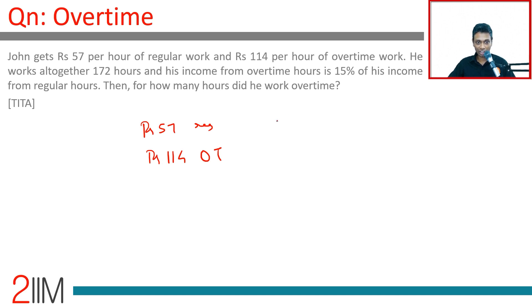Let's say he works t hours regular. He works 172 minus t hours overtime. So 57t is the total he gets from regular work, and 114 into 172 minus t is the total he gets from overtime.